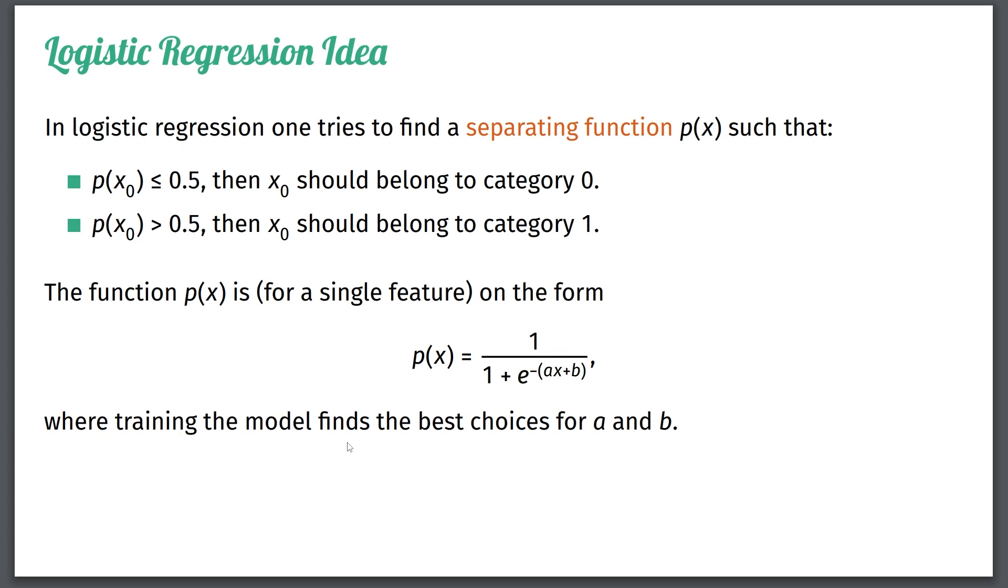So to summarize this, logistic regression finds the best values for a and b, given your data, and then we use this function here, with a and b plugged in, to decide for a new observation x0, whether you're a 0 or you're a 1.